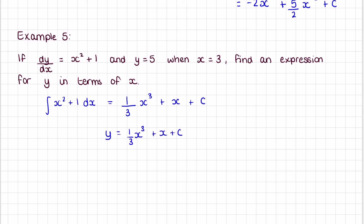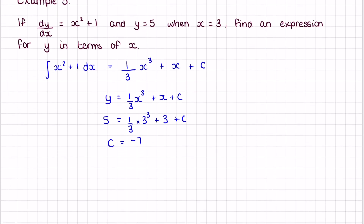So y = (1/3)x³ + x + c. We can substitute in y = 5 and x = 3: 5 = (1/3)(3³) + 3 + c. Rearranging and solving, we find c = −7. So the final answer is y = (1/3)x³ + x − 7. The first step is the same — work out the integration to find the original function — then substitute the given point to find the c value.